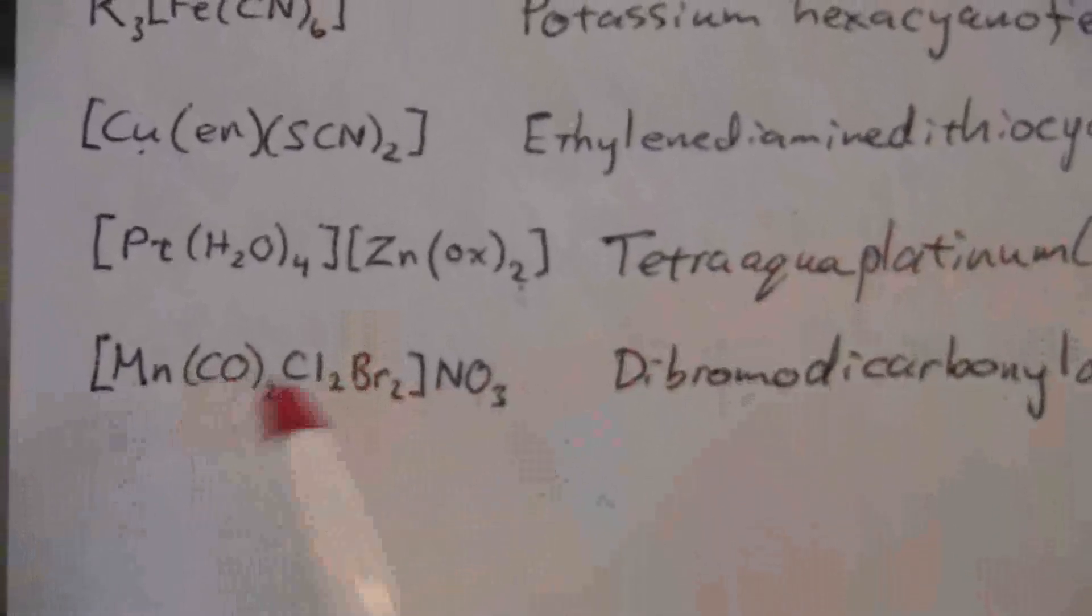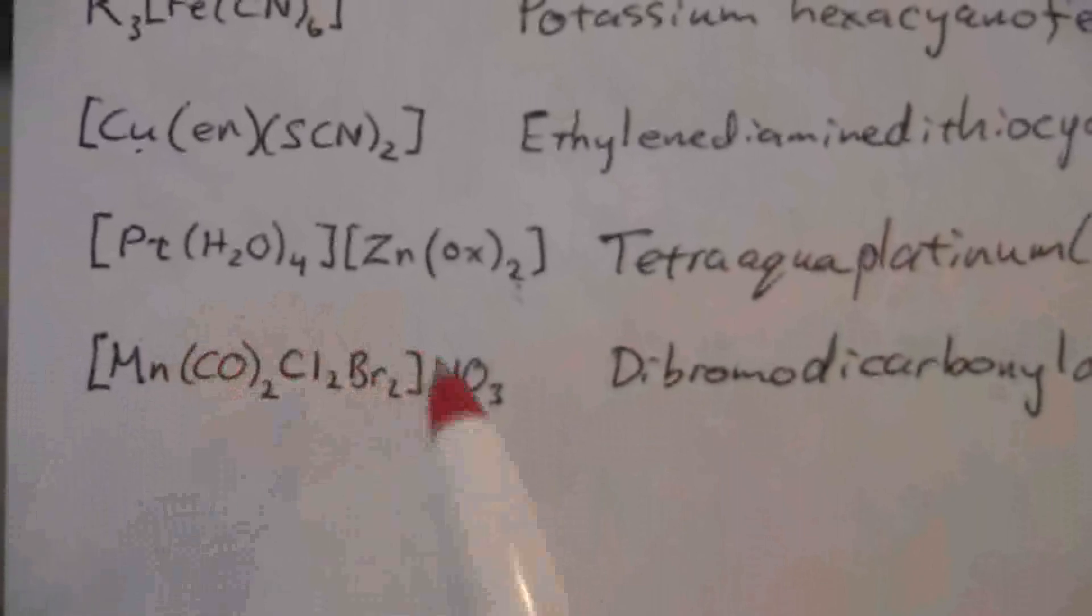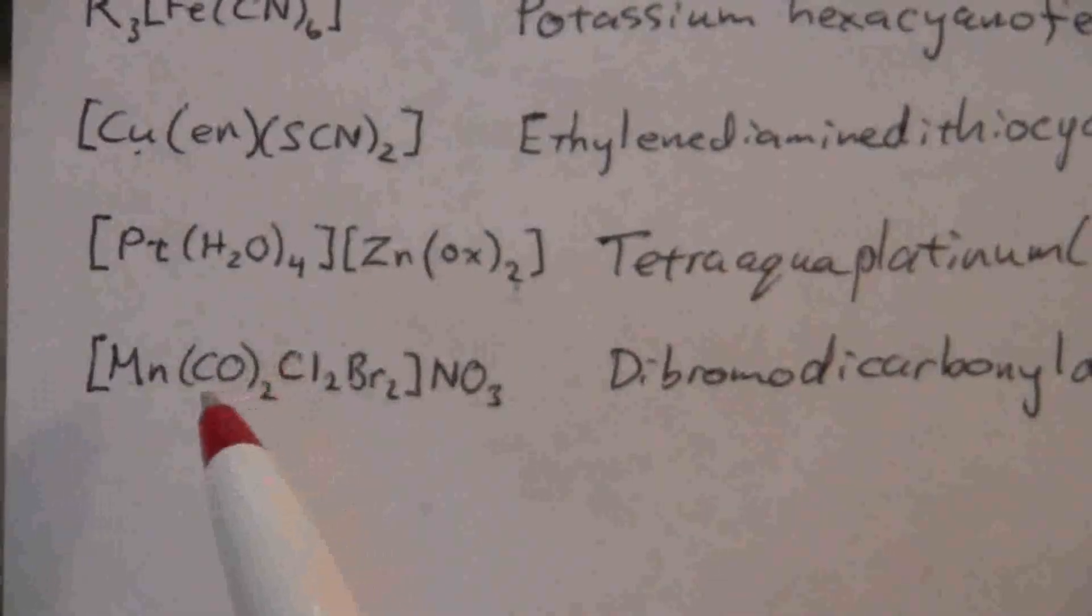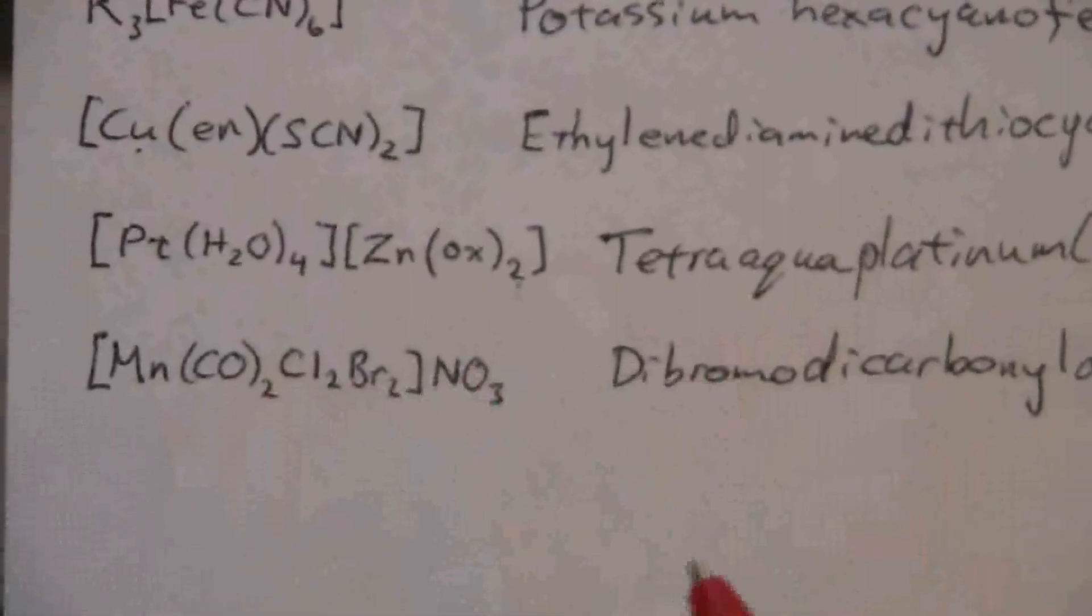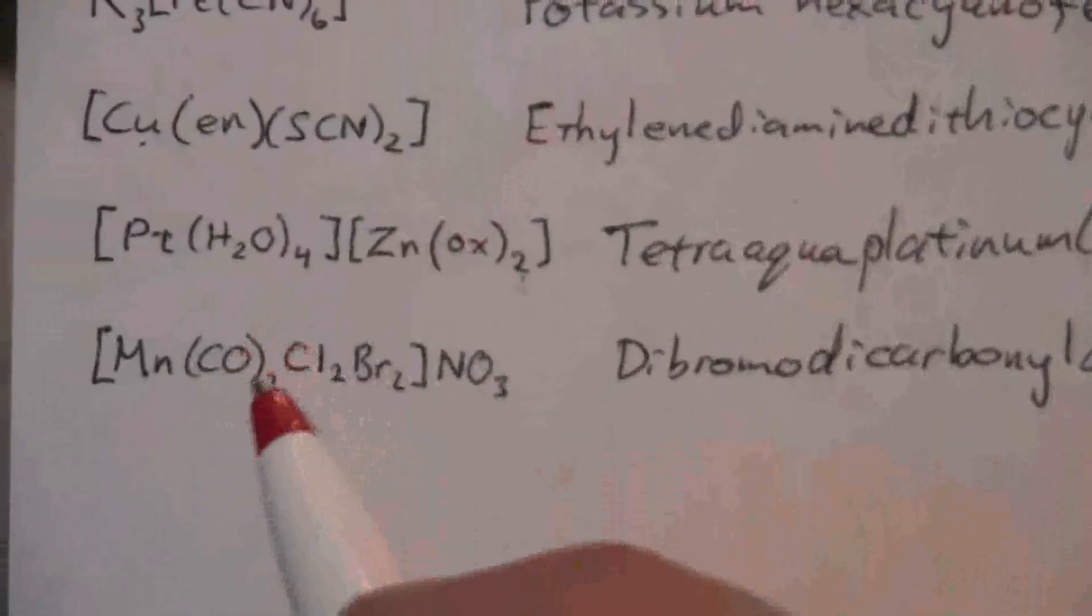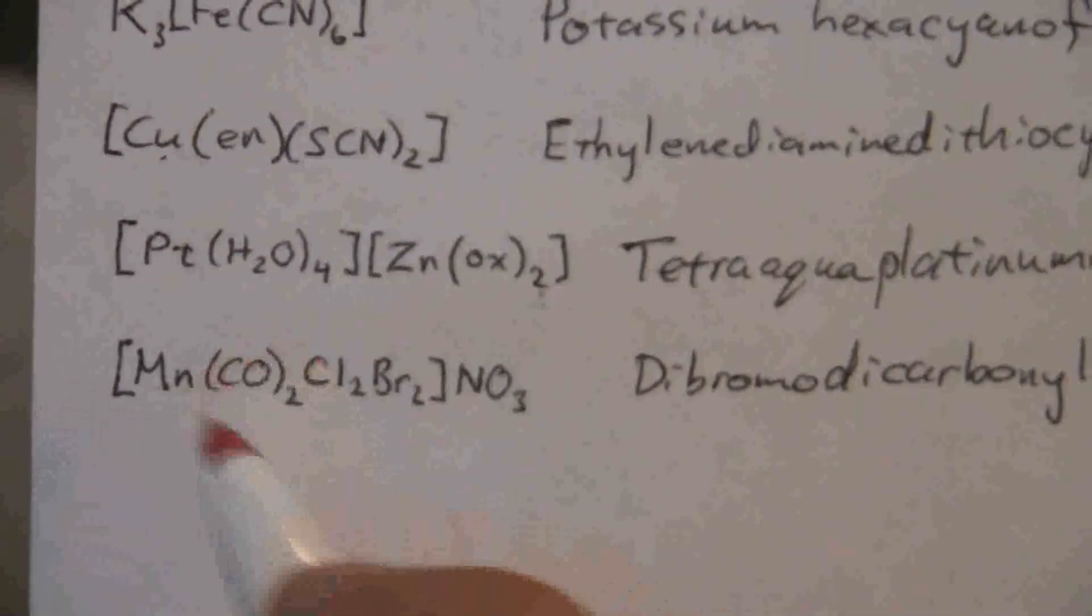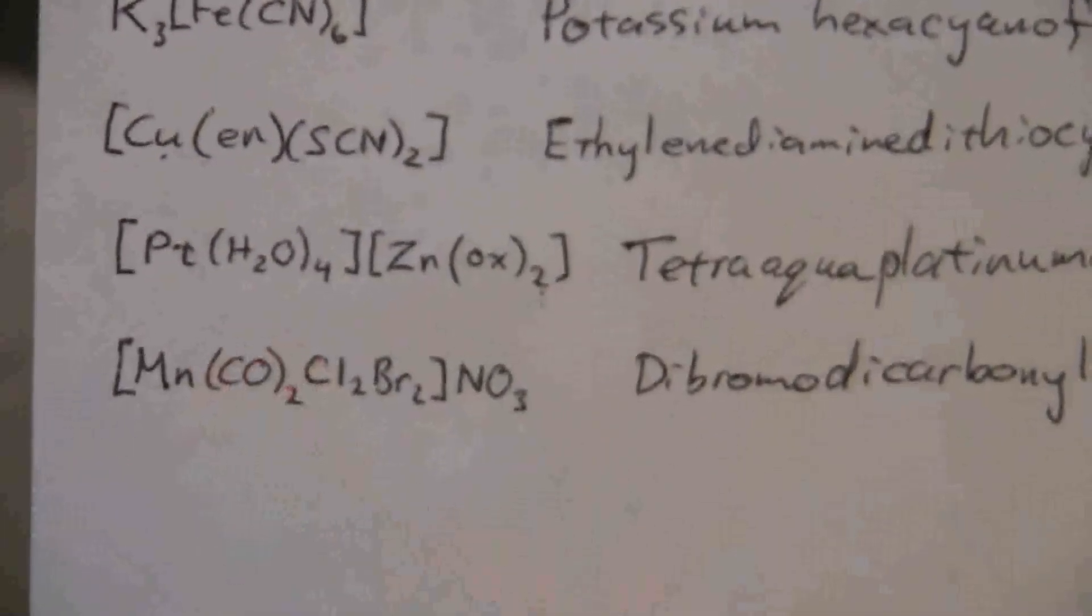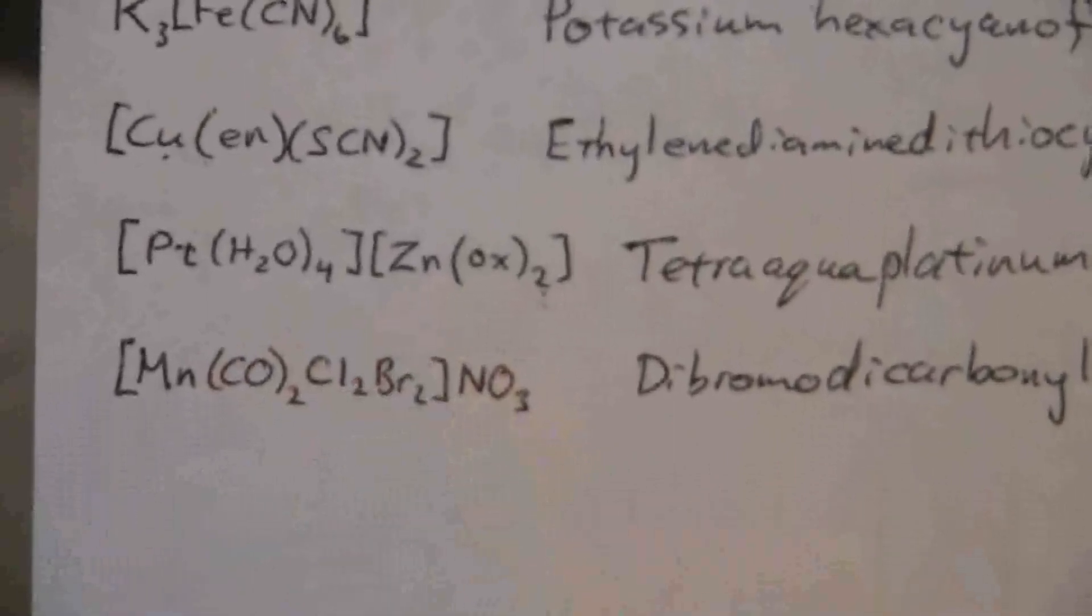Just one quick note. When we write formulas, we have a rule to govern which ligands come first. Okay. It's fairly simple. So the neutral ligands will always come first, and then the ionic ligands. Okay.